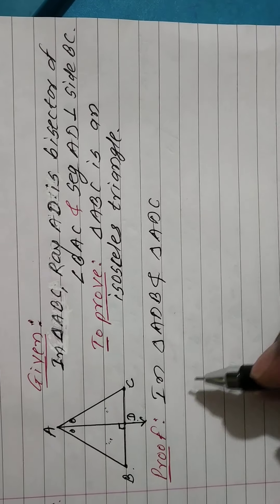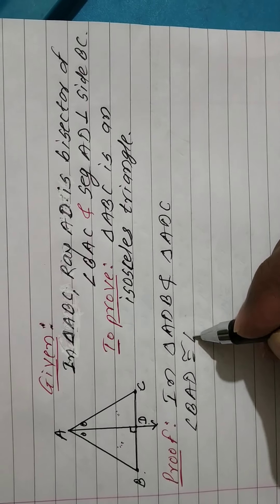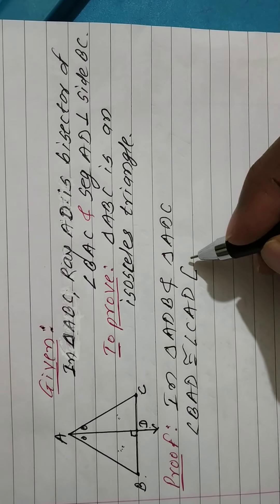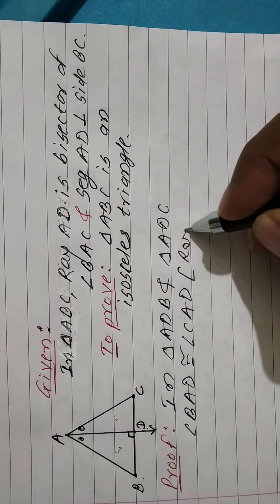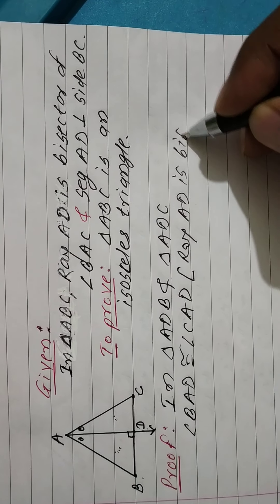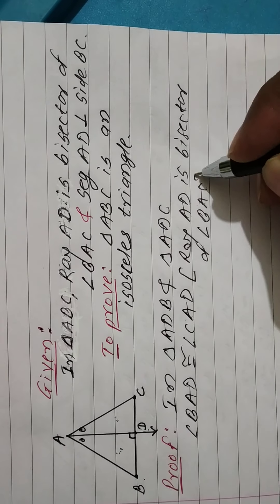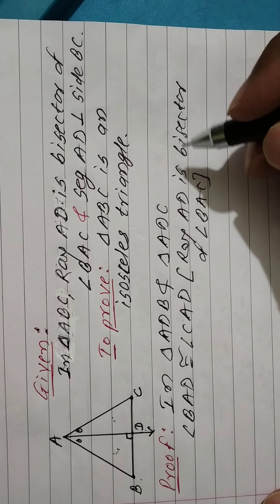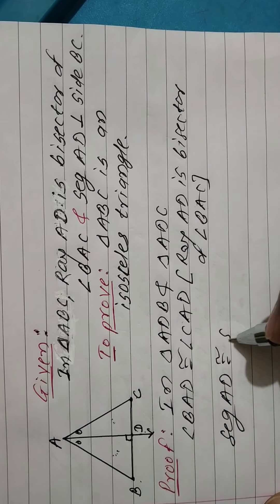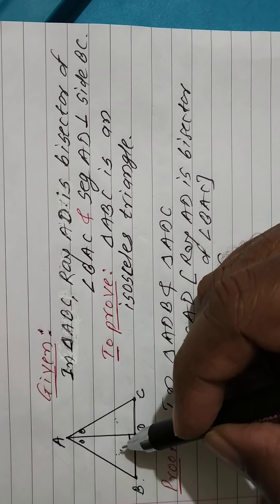Angle BAD is congruent to angle CAD because ray AD is the bisector of angle BAC. This is given. Again, segment AD is congruent to segment AD — AD is the common side in both triangles.